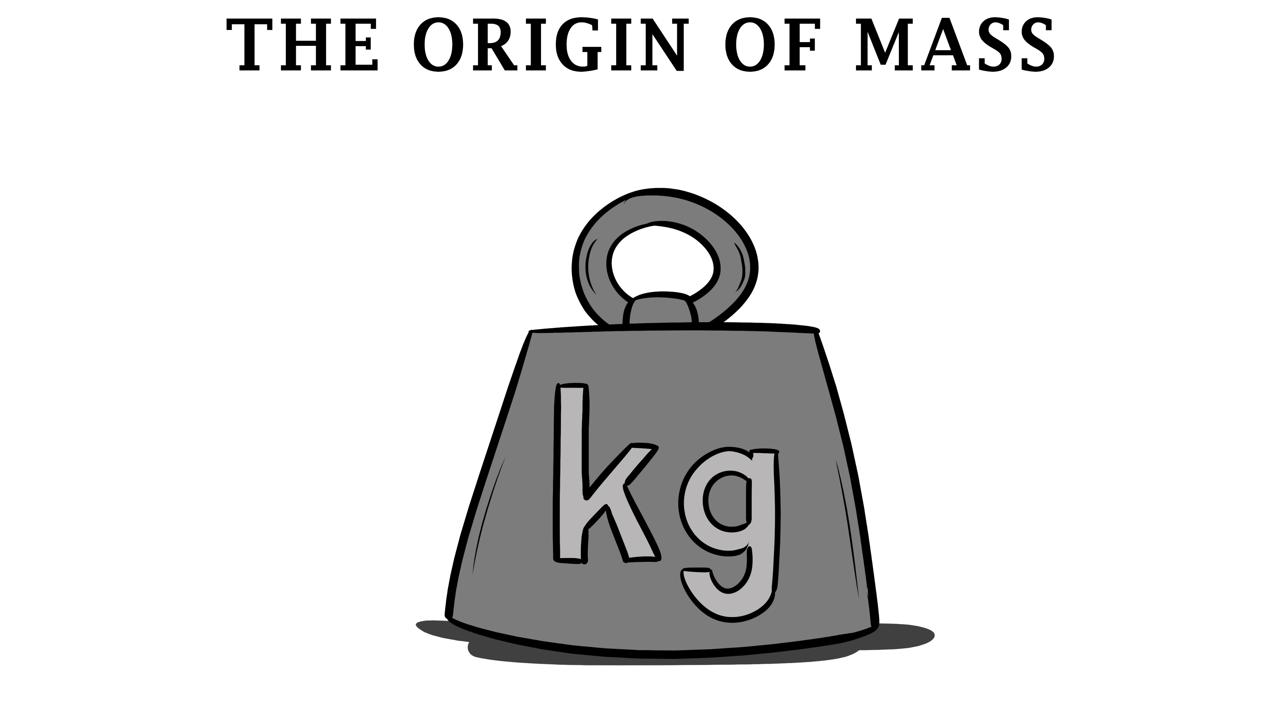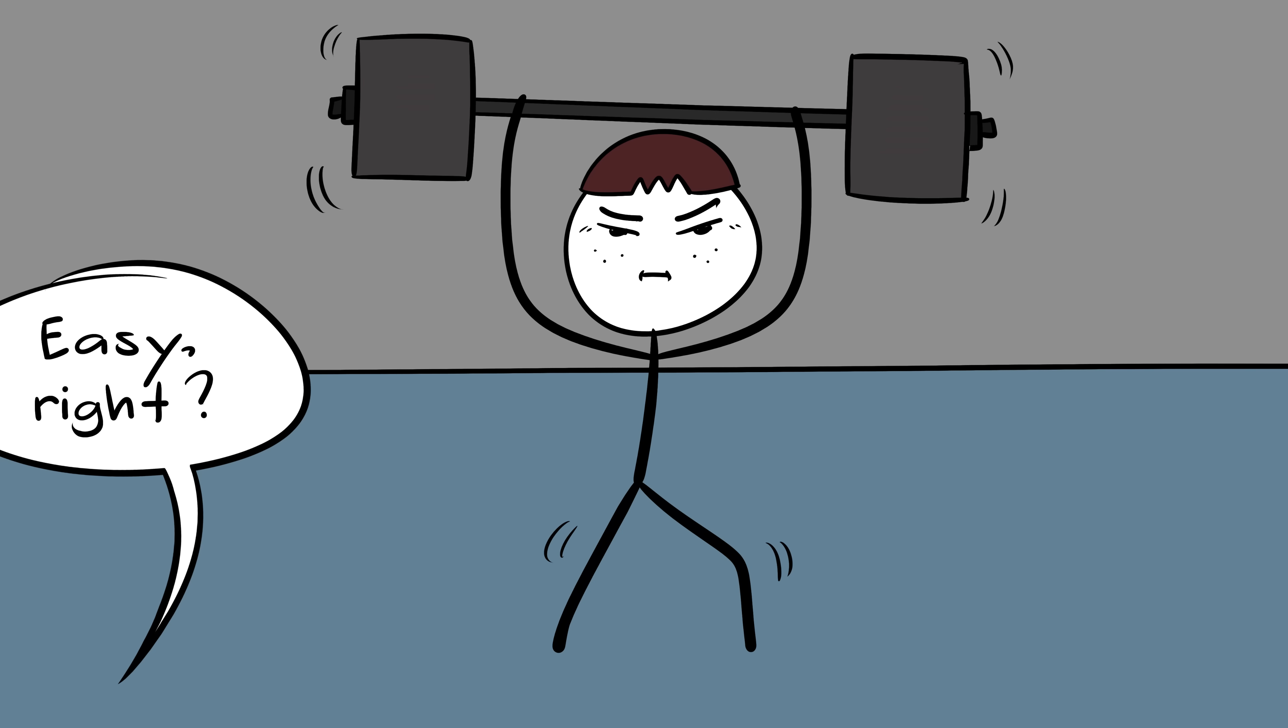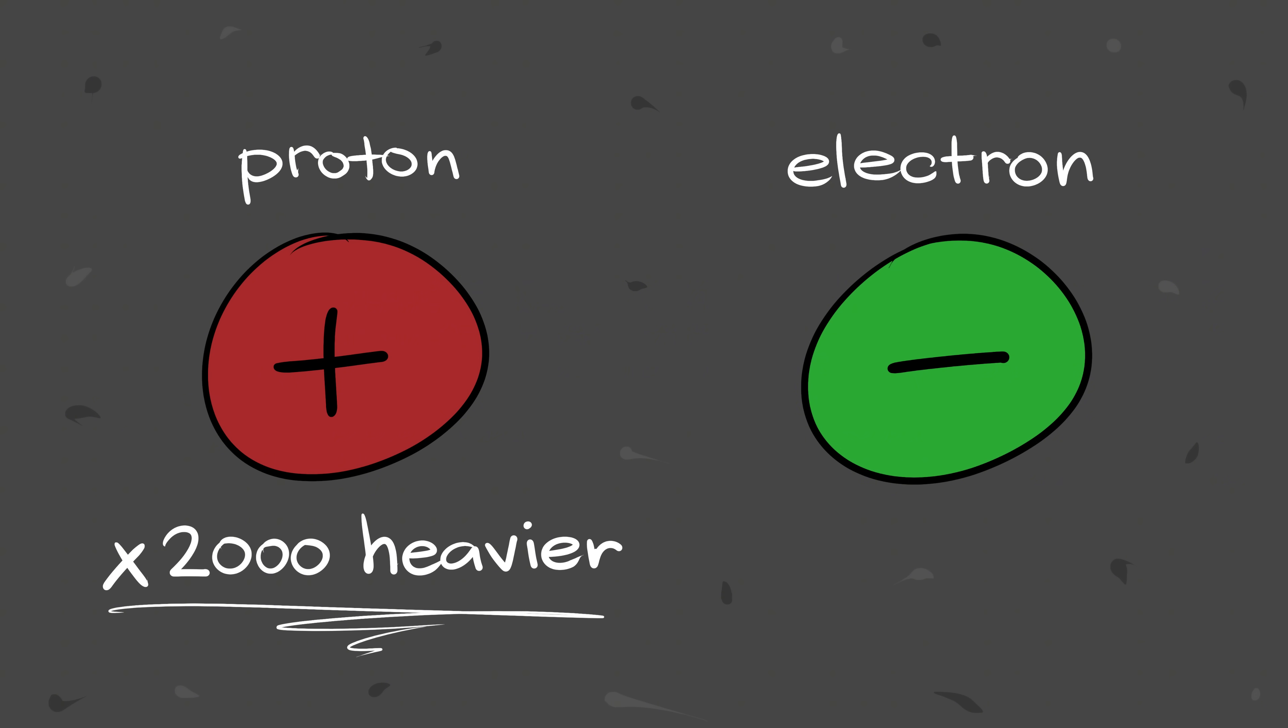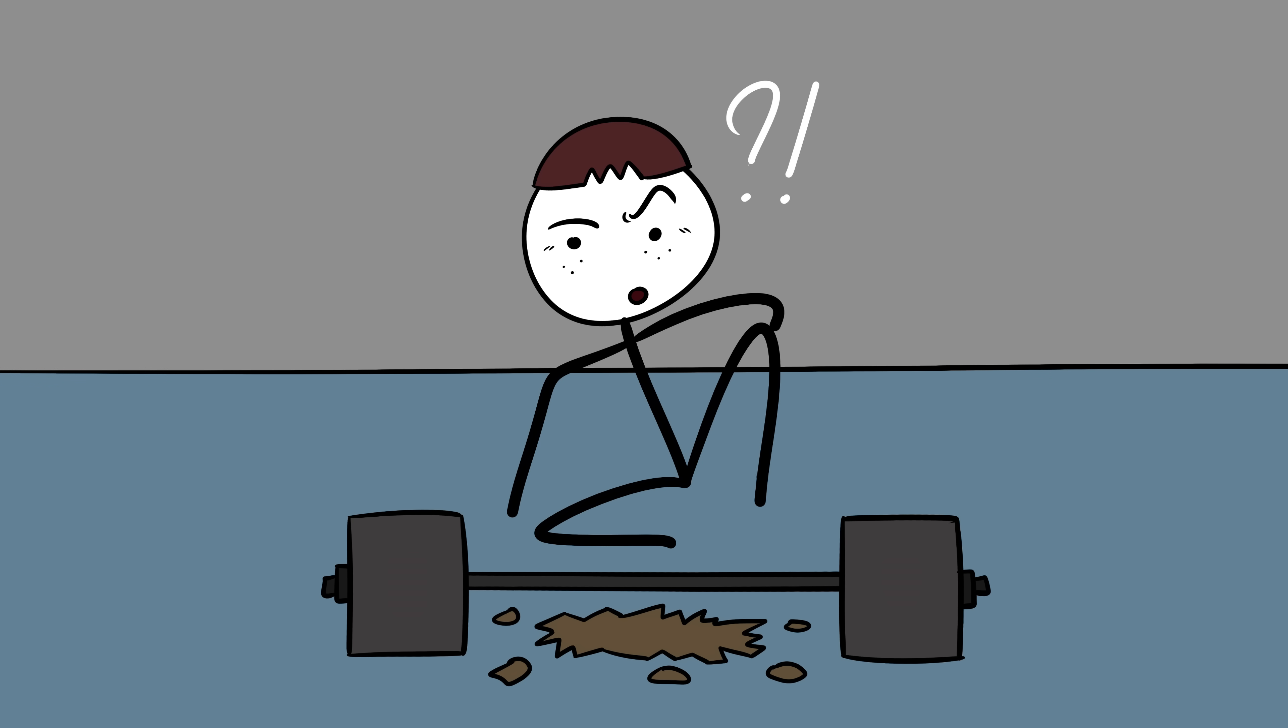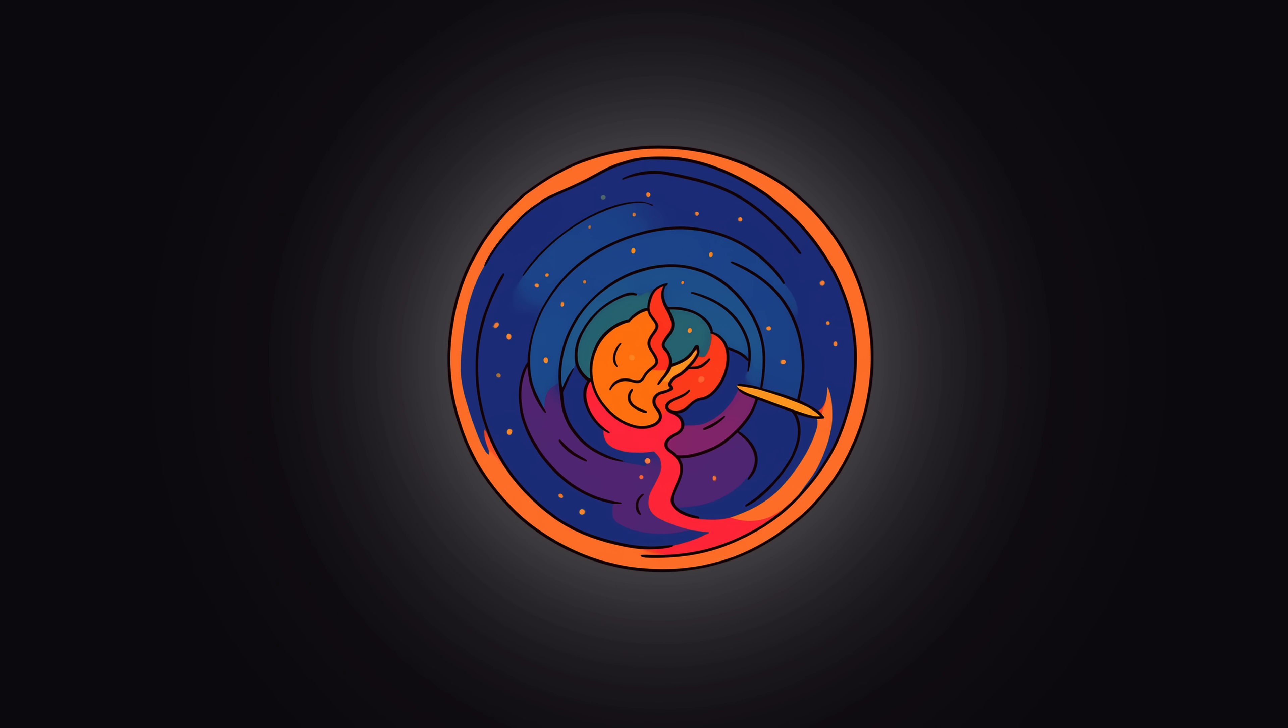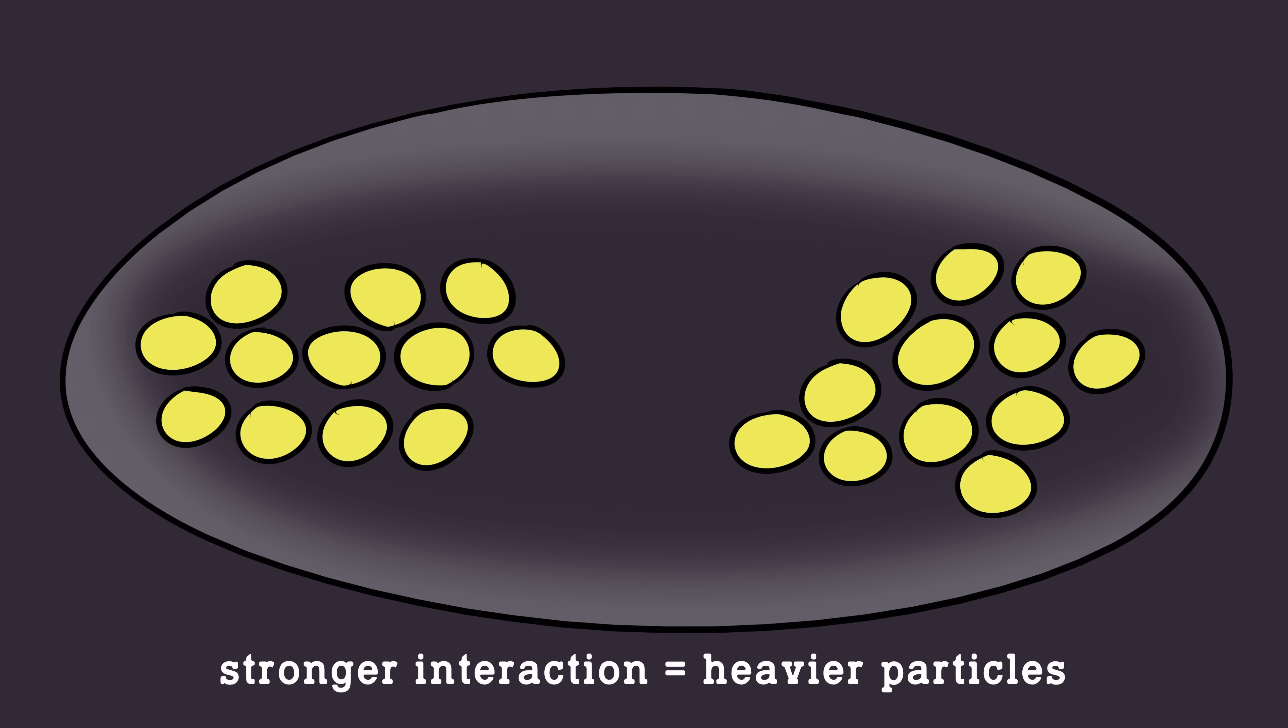Number three, the origin of mass. Mass feels like one of those basic things we shouldn't have to explain. Stuff weighs something. Easy, right? Not really. For a long time, physicists didn't actually know why matter has mass. Why does a proton weigh more than an electron? Why does anything weigh anything at all? Then came the Higgs boson, the so-called god particle discovered in 2012. It confirmed that particles interact with an invisible field spread throughout the universe, and that interaction gives them mass. The stronger the interaction, the heavier the particle. Sounds neat and tidy, except it raises even more questions.